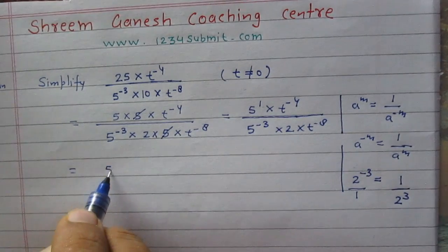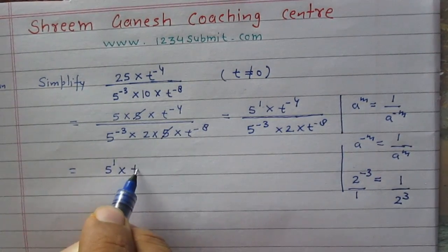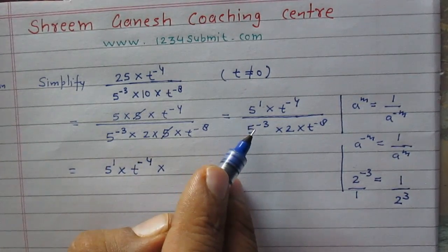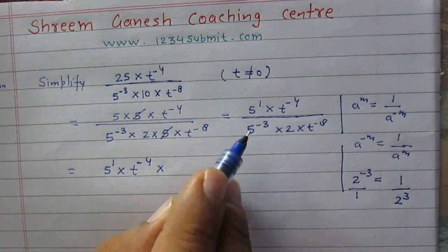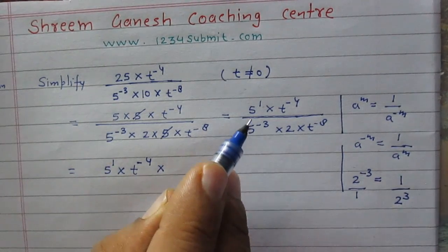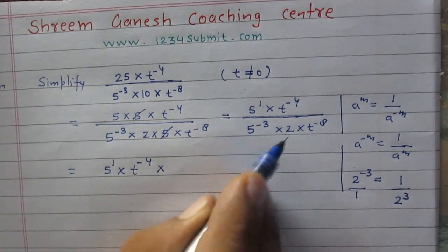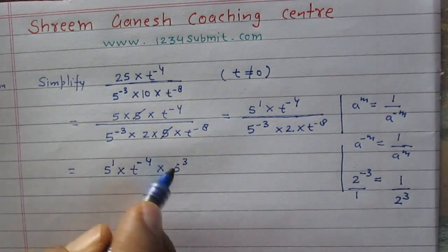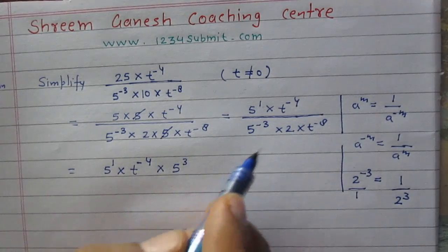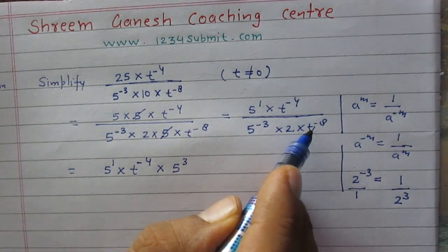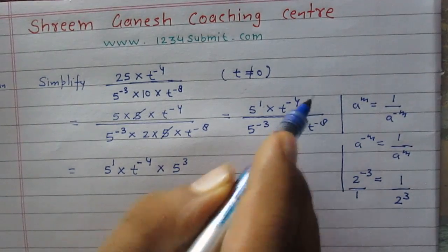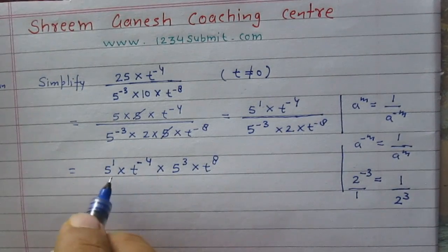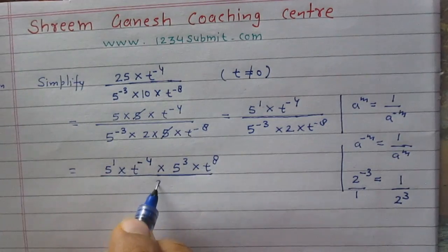Rewriting: the numerator has 5 raised to power 1 multiplied by t raised to power minus 4. Here, 5 raised to power minus 3 is in the denominator — if you transfer it to the numerator it becomes 5 raised to power 3. Similarly, t raised to power minus 8 transferred from denominator to numerator becomes t raised to power 8. We leave 2 in the denominator.